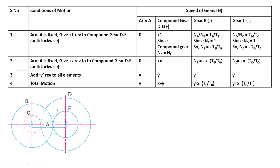Since NE = 1, NB = minus TE by TB — the sign changes because if E is rotating anticlockwise, B rotates clockwise. Now for gear C meshing with gear D: NC by ND = TD by TC. Since ND = 1, NC = minus TD by TC. So these are the gear ratios for each gear in the first step of the tabulation.